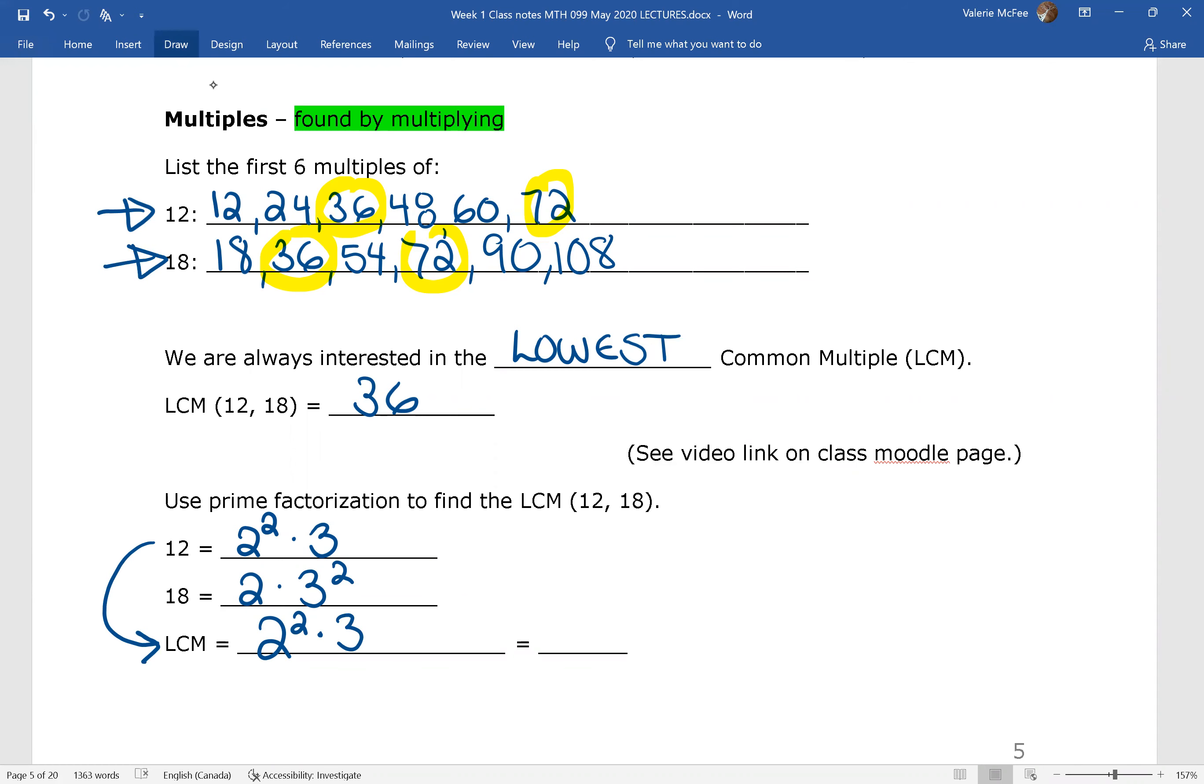But the multiples of 18 also contain 18: 1 times 18, 2 times 18. What does 18 need? Well, 18 needs a 2. I've already got more than one 2, so that's fine. 18 needs two 3s. I only have one 3 here. That means I need two 3s. The lowest common multiple, like we already found, is 4 times 9, or 36.